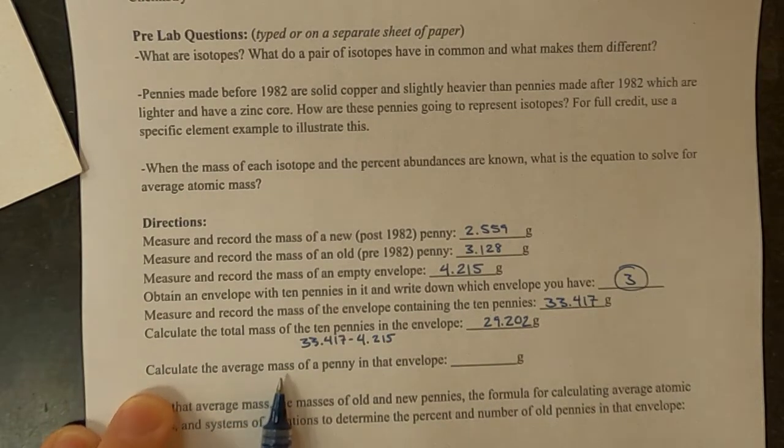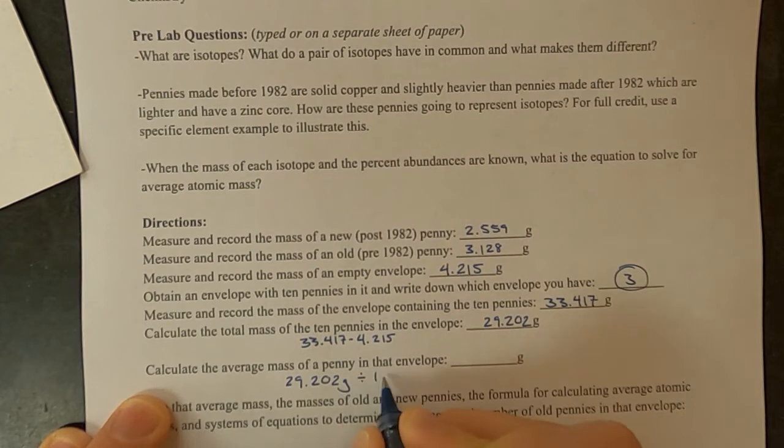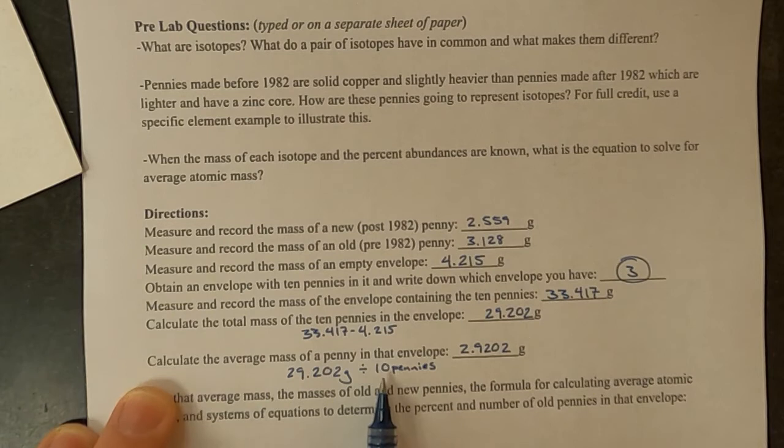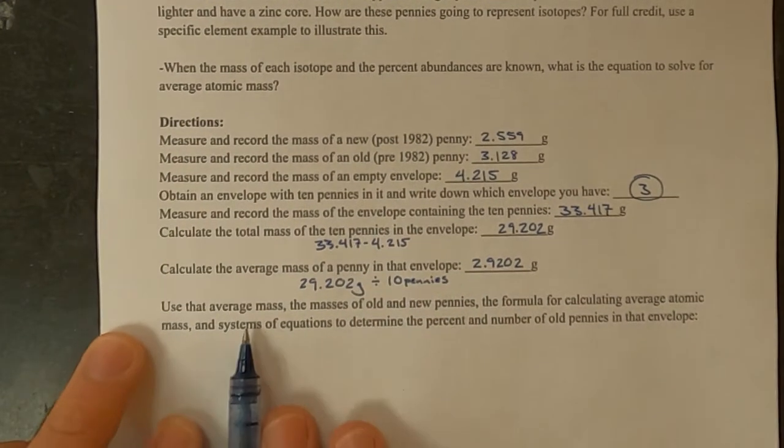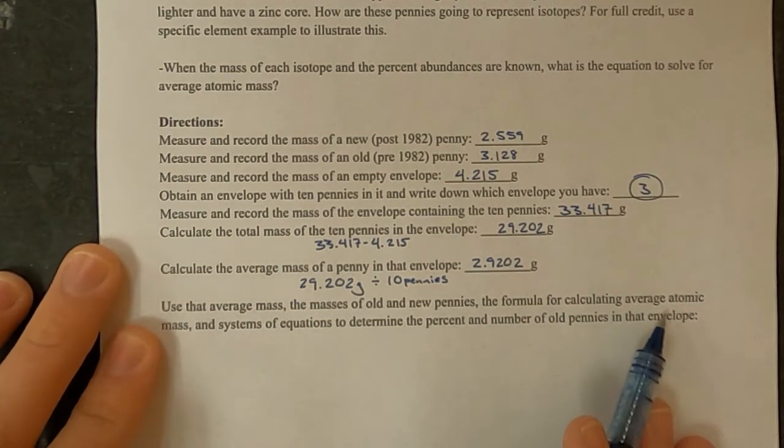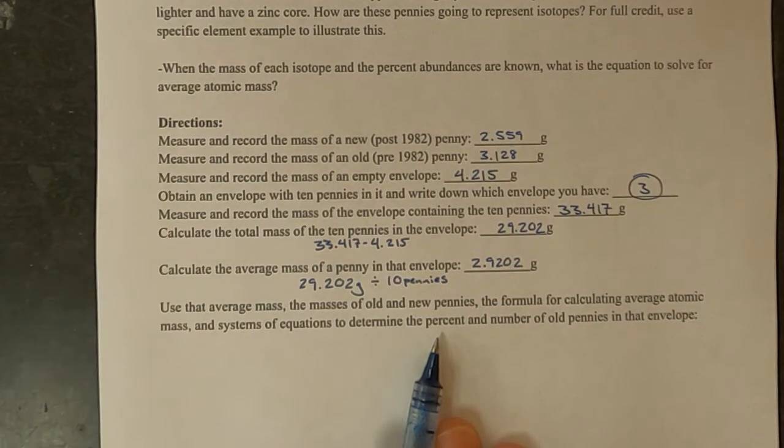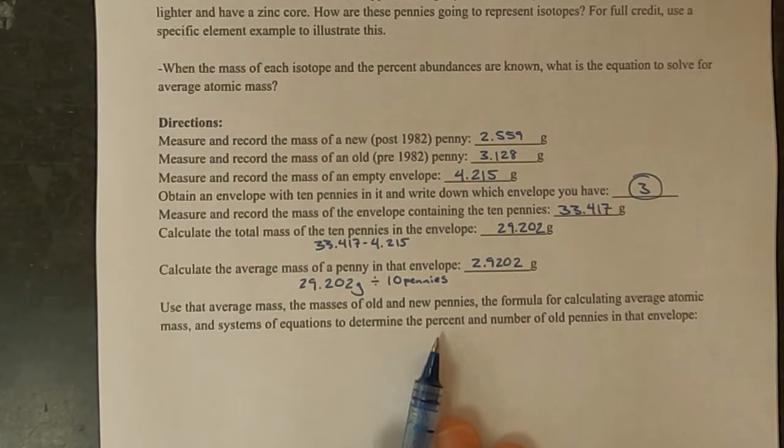I get an answer of 29.202. To calculate the average mass, we do know that there are 10 pennies in every envelope, so it would be to divide this by 10. Now the 10 in this case was an exact number, a counting number. We knew that they were exactly 10, so this did not have any effect on the number of sig figs in our final answer.